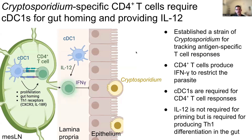Using our new strains of cryptosporidium, we discovered that type 1 conventional dendritic cells, or CDC1s, are dispensable for priming of CD4 T-cells during infection, but are required for driving expression of gut homing molecules in the mesenteric lymph node. Therefore, in the absence of CDC1s, CD4 T-cells fail to home to the gut. Additionally, we found that CDC1s are required for producing IL-12 in the gut to drive local interferon gamma expression by CD4 T-cells that control the parasite.